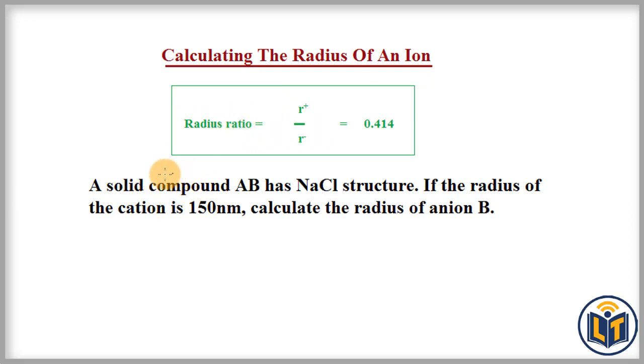In solving this problem, I will show you how you can calculate the radius of anions. The problem says that a solid compound AB has NaCl structure. The type of structure is shown by this compound AB.